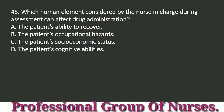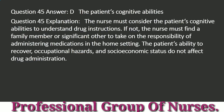Question 45: Which human element considered by the nurse in charge during assessment can affect drug administration? a. The patient's ability to recover. b. The patient's occupational hazards. c. The patient's socioeconomic status. d. The patient's cognitive abilities. Answer: d. The patient's cognitive abilities. Explanation: The nurse must consider the patient's cognitive abilities to understand drug instructions. If not, the nurse must find a family member or significant other to take on the responsibility of administering medications in the home setting. The patient's ability to recover, occupational hazards, and socioeconomic status do not affect drug administration.